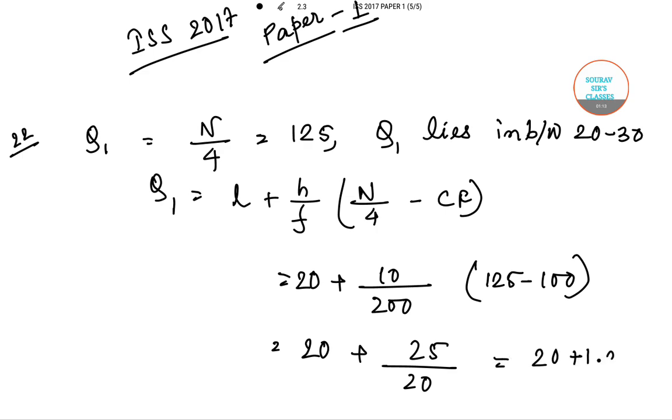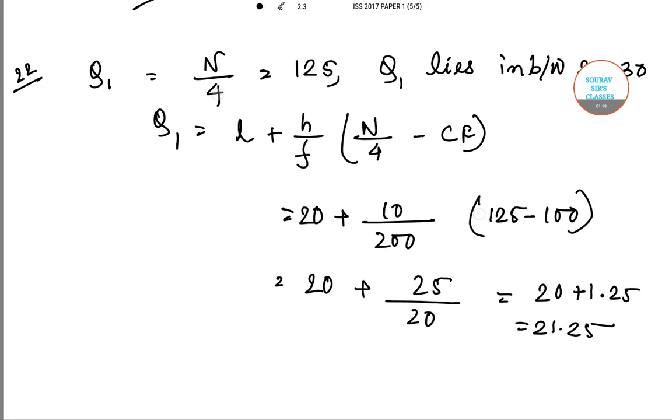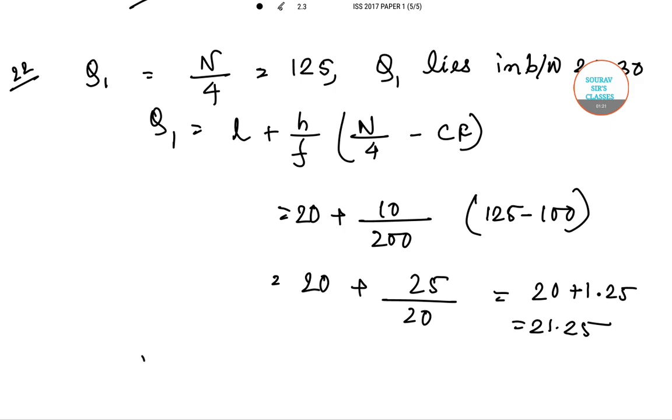Now for Q₃, we will say that Q₃ has a frequency of 3N/4, that gives us 375. So Q₃ is 375 and Q₃ lies between 30 to 40.